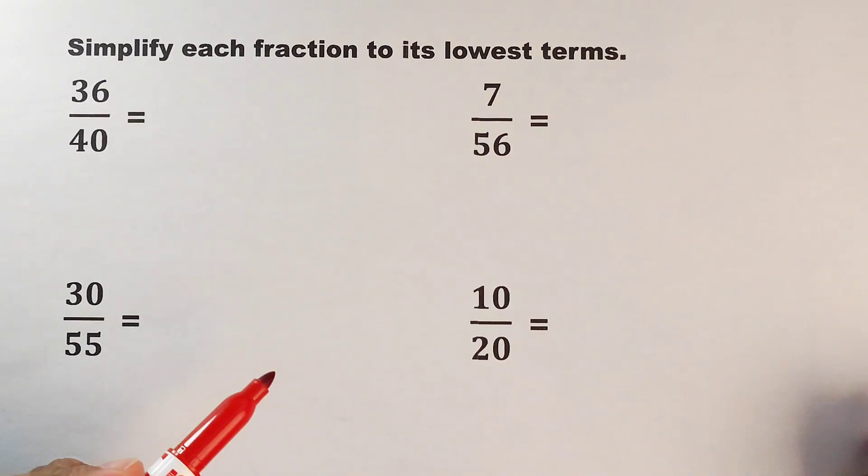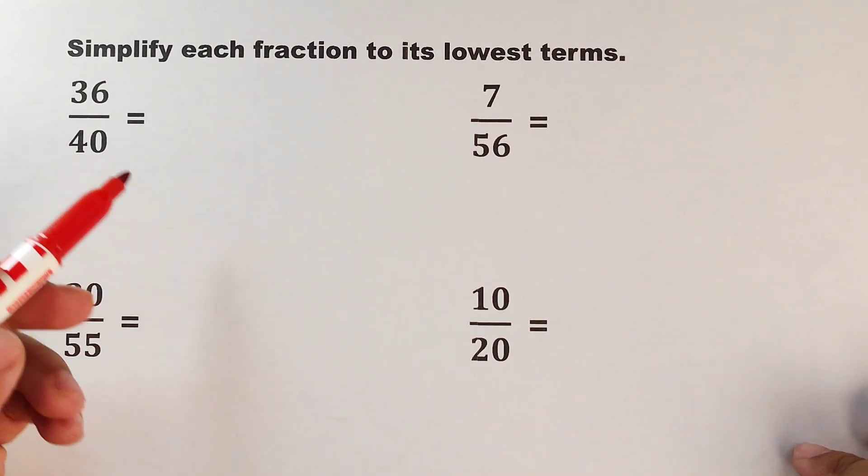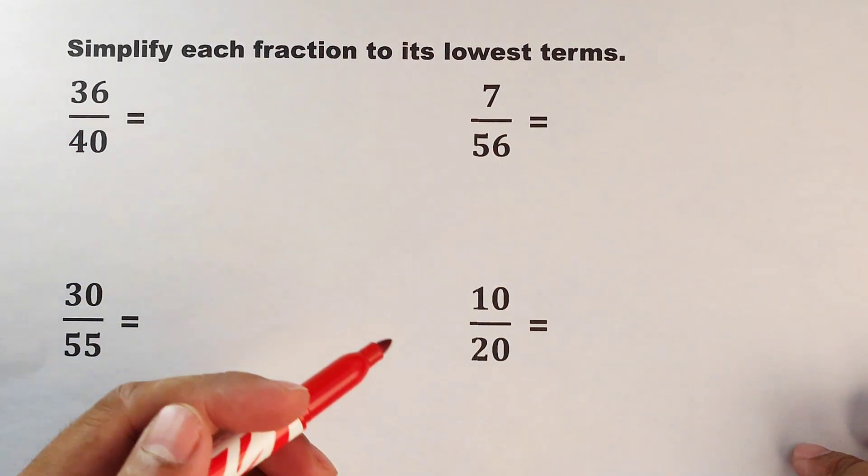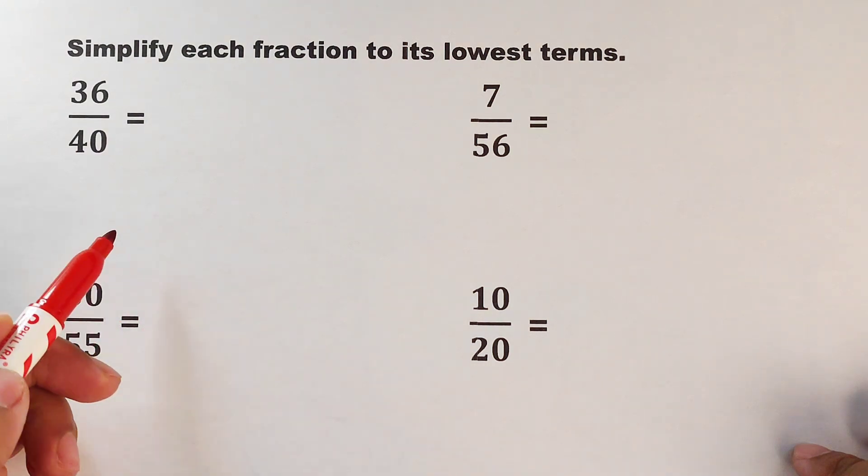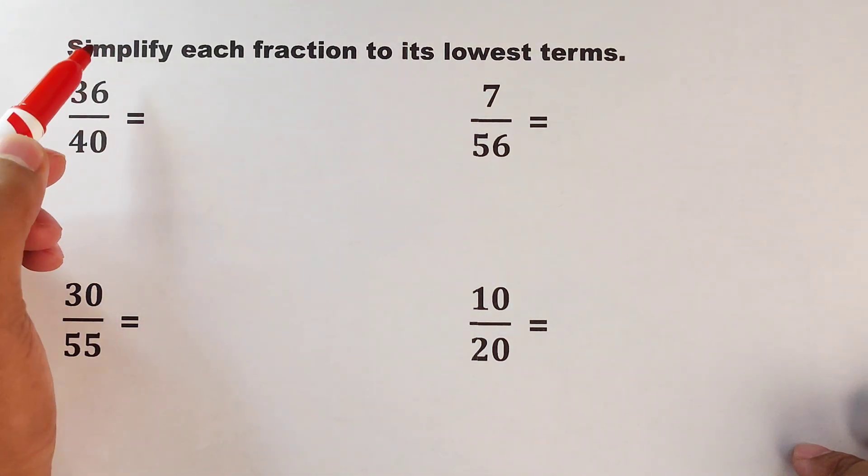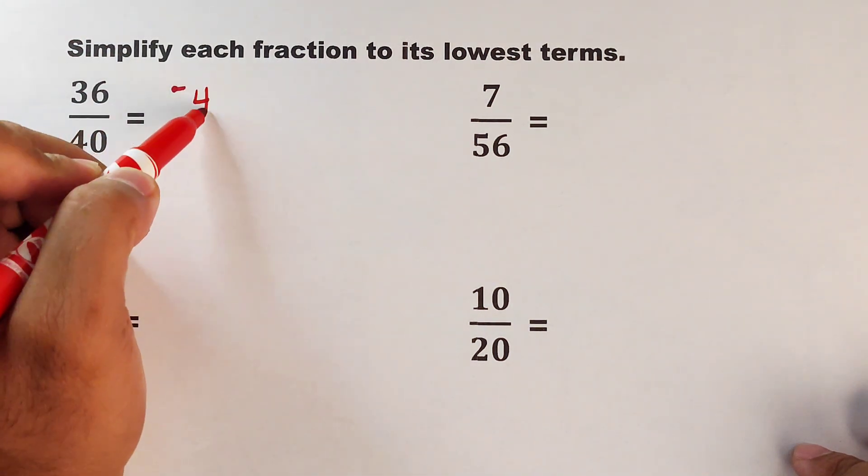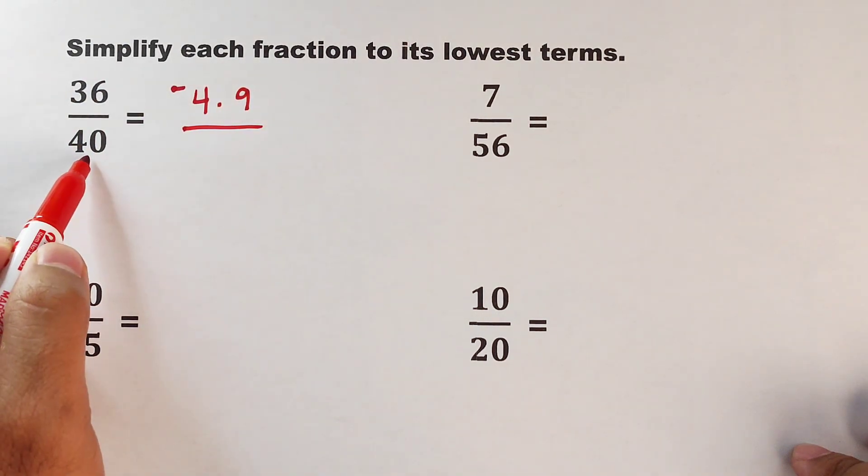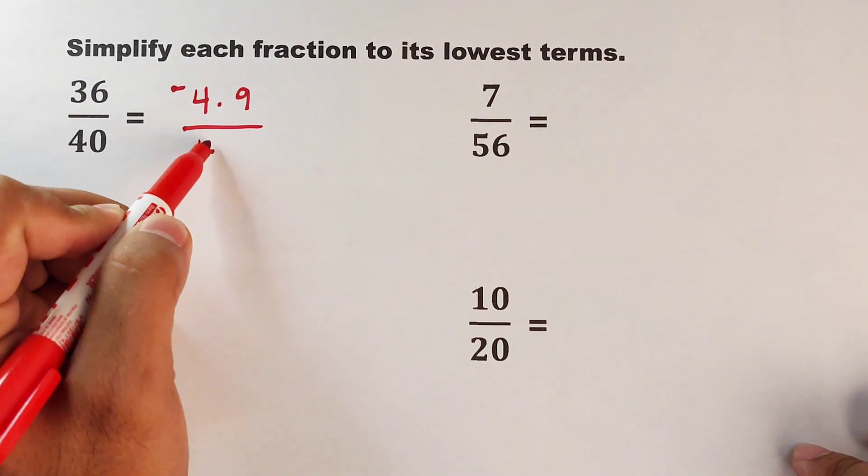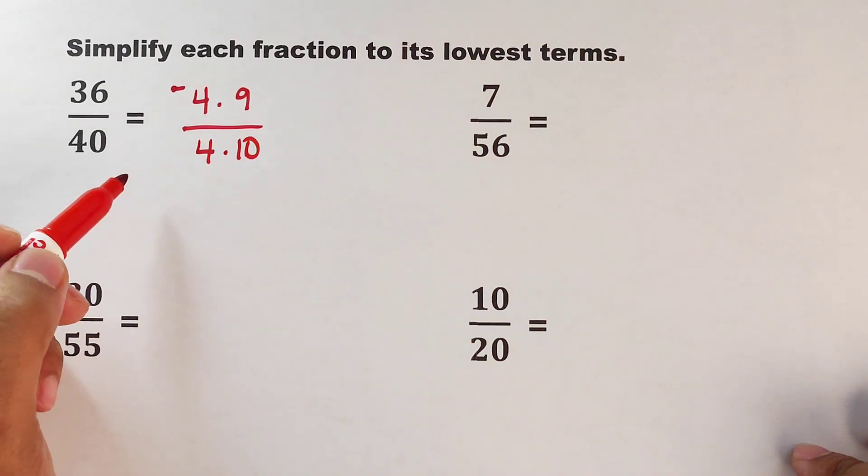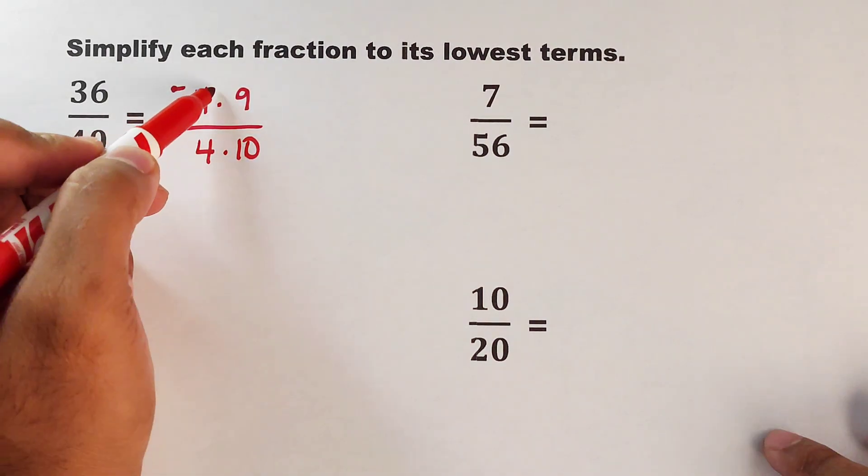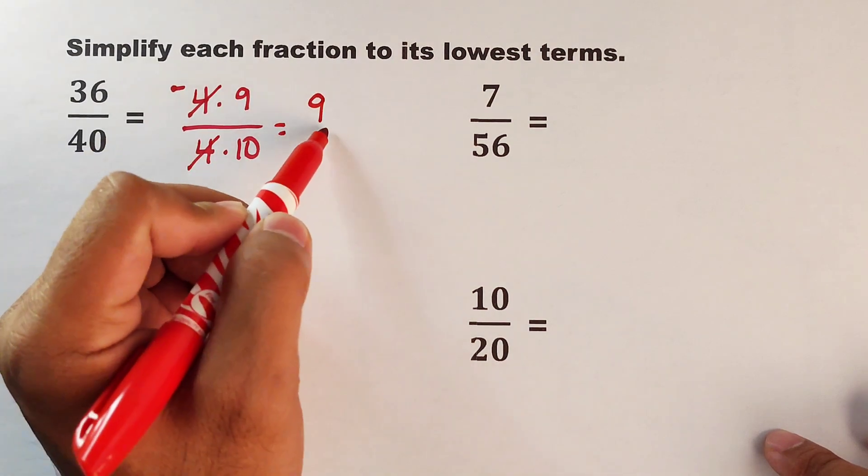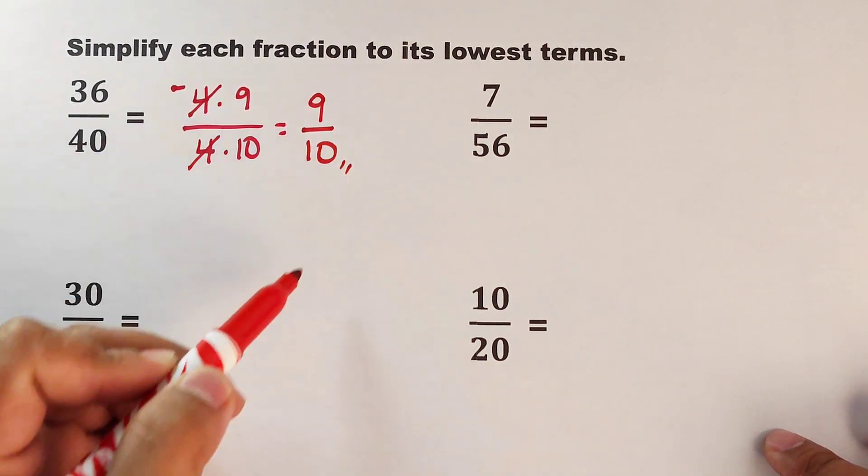Now let's move on with the second set of fractions. We have here 36 over 40. This 36 can be expressed in multiple possible factors, but we can choose the factor as 4 times 9 over 40 can be expressed as 4 times 10. They have the common factor, which is 4. Cancel this out, and the simplified form is 9 over 10.